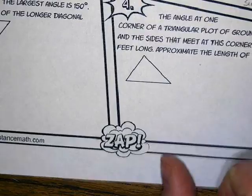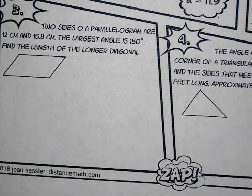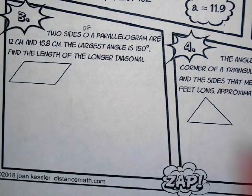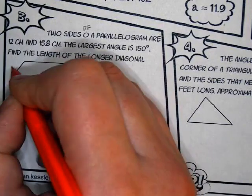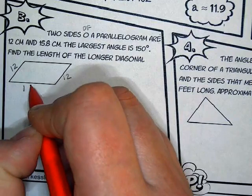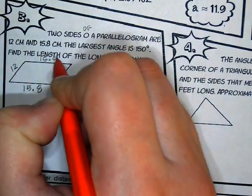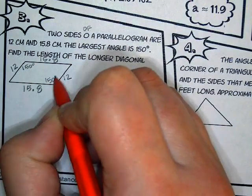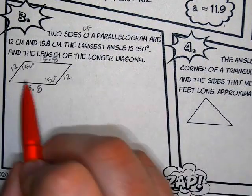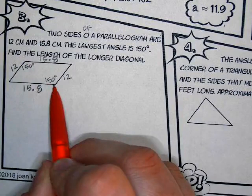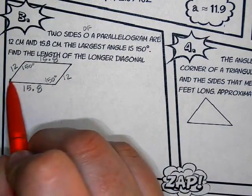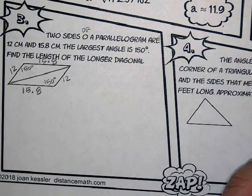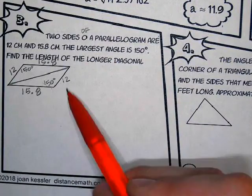Let's do the next problem. Two sides of a parallelogram are 12 centimeters and 15.8 centimeters. We're going to label this — 15.8 and 15.8. The largest angle is 150 degrees. Find the length of the longer diagonal. The diagonals go from the opposite corner to the opposite corner, so they want us to find the length of this diagonal. We have divided that parallelogram into two triangles with side-angle-side information, so this is a law of cosines problem.